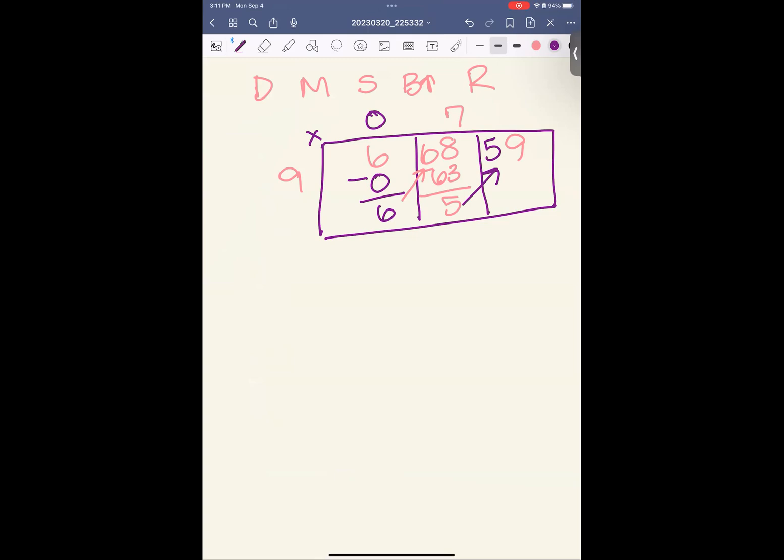How many groups of 9 can I take out of 59? I can do 6 because 6 times 9 is 54. Subtract. 59 minus 54 is 5. There is nothing left for me. I've used all of my numbers. The number that I have is, in fact, smaller than the number that I started with. So we have a remainder here. Our answer is 76 with a remainder of 5.